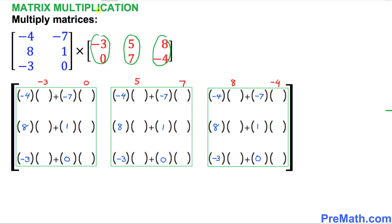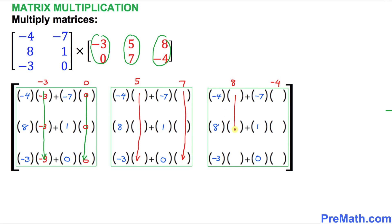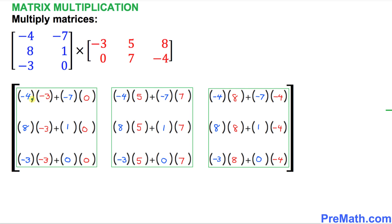Now these red row values get filtered into the corresponding slots across the grid. Negative three fills across its column, zero fills across its column, five and seven fill across theirs, and eight and negative four fill in their positions. Here is our final product layout after filling out all the blue and red numbers.